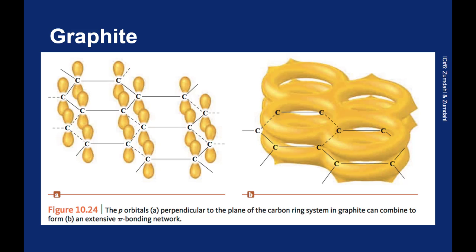But as we know already, pi bonding is not nearly as strong as sigma bonding. So it's very easy to separate one sheet from another. Very hard to break apart a single sheet.